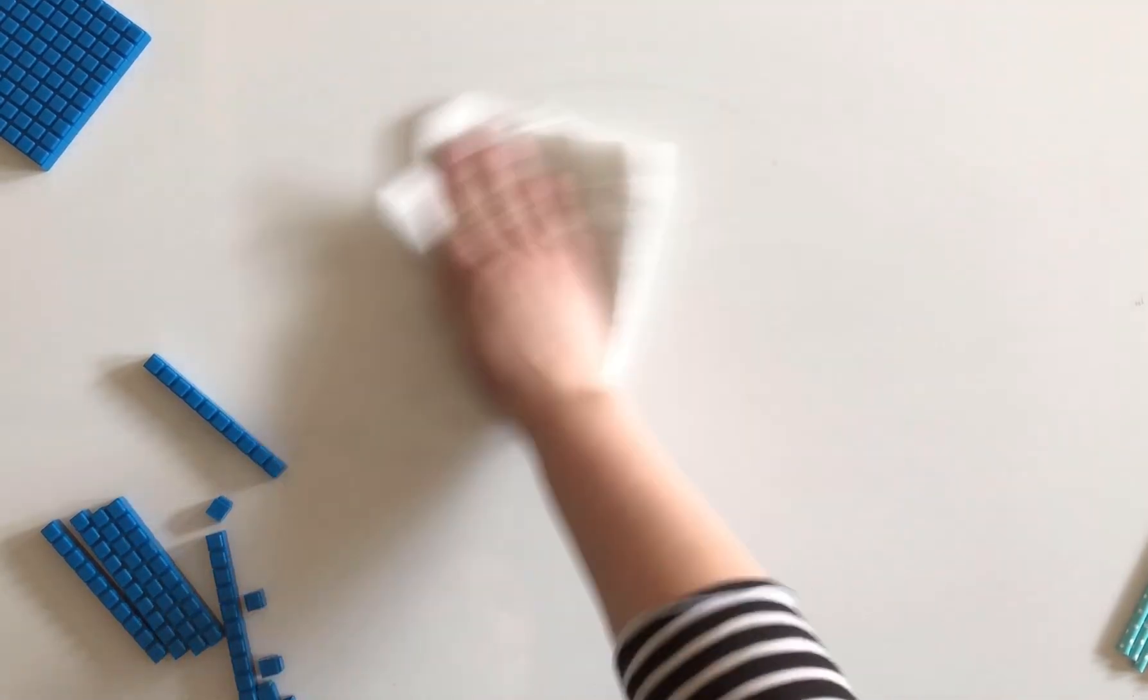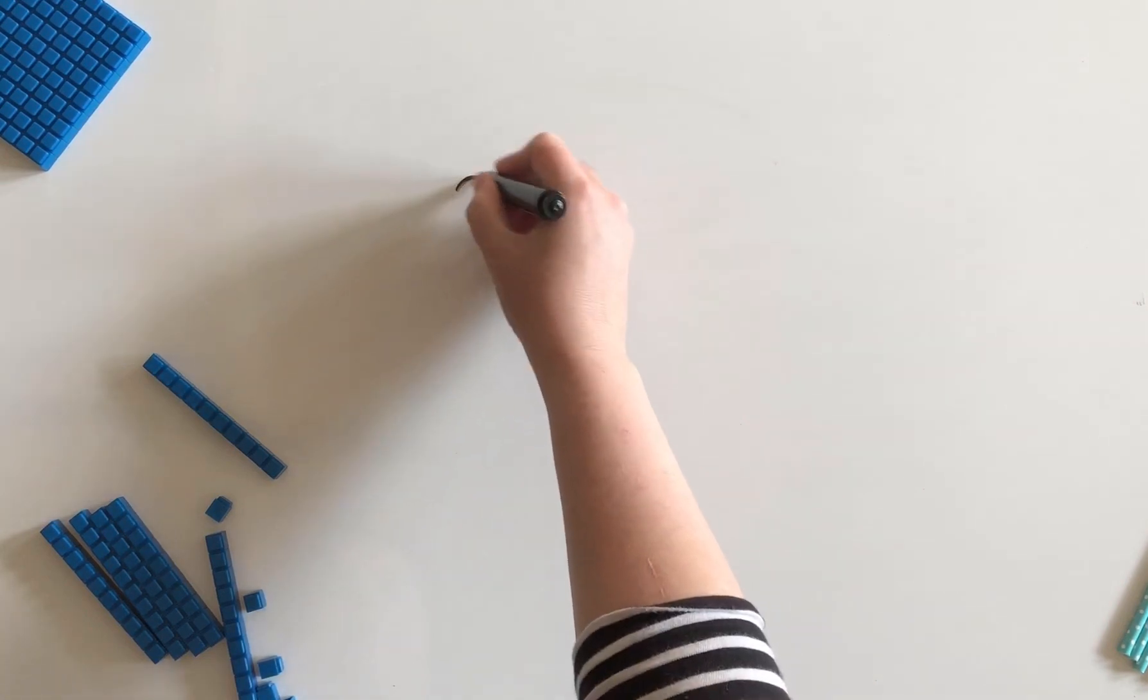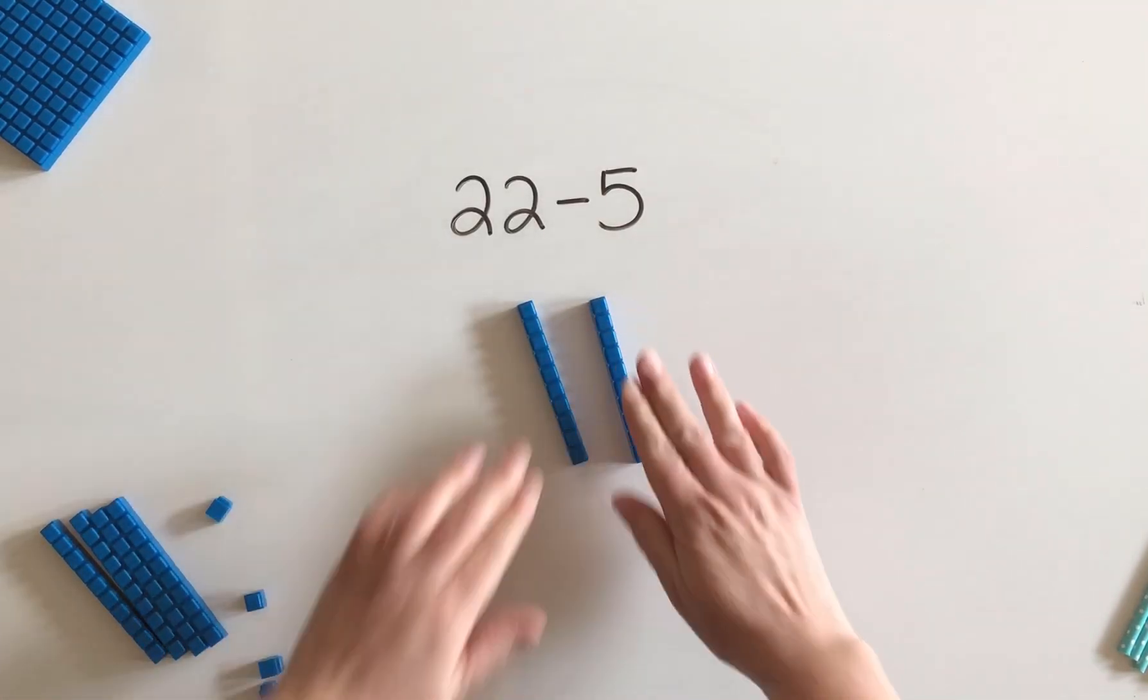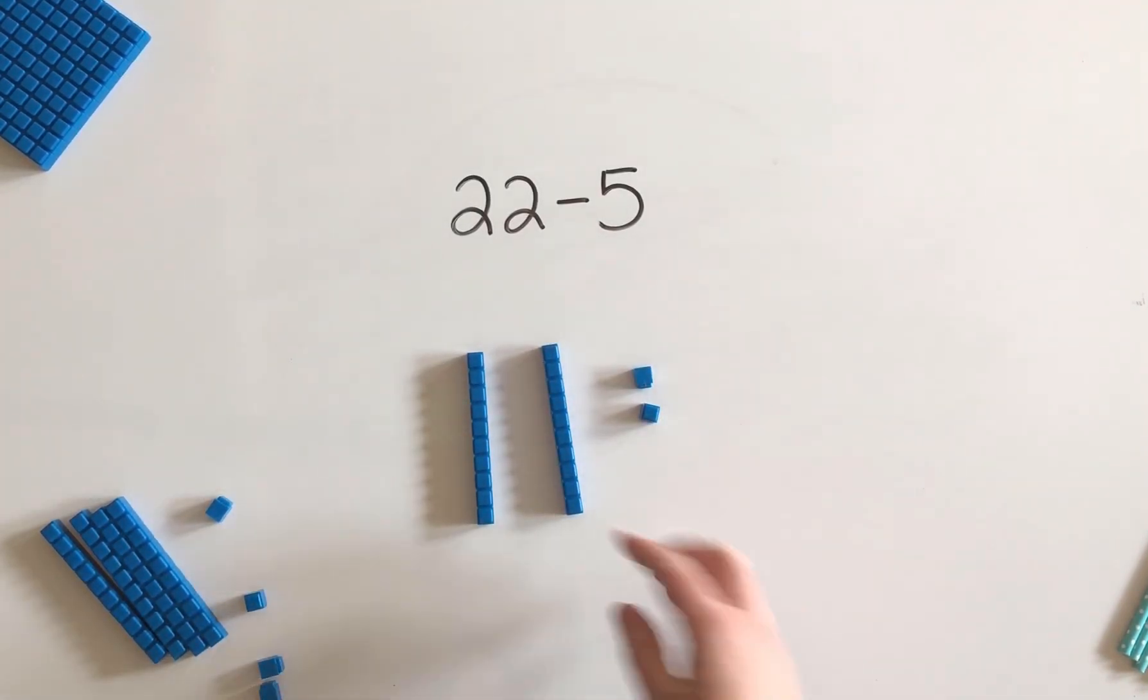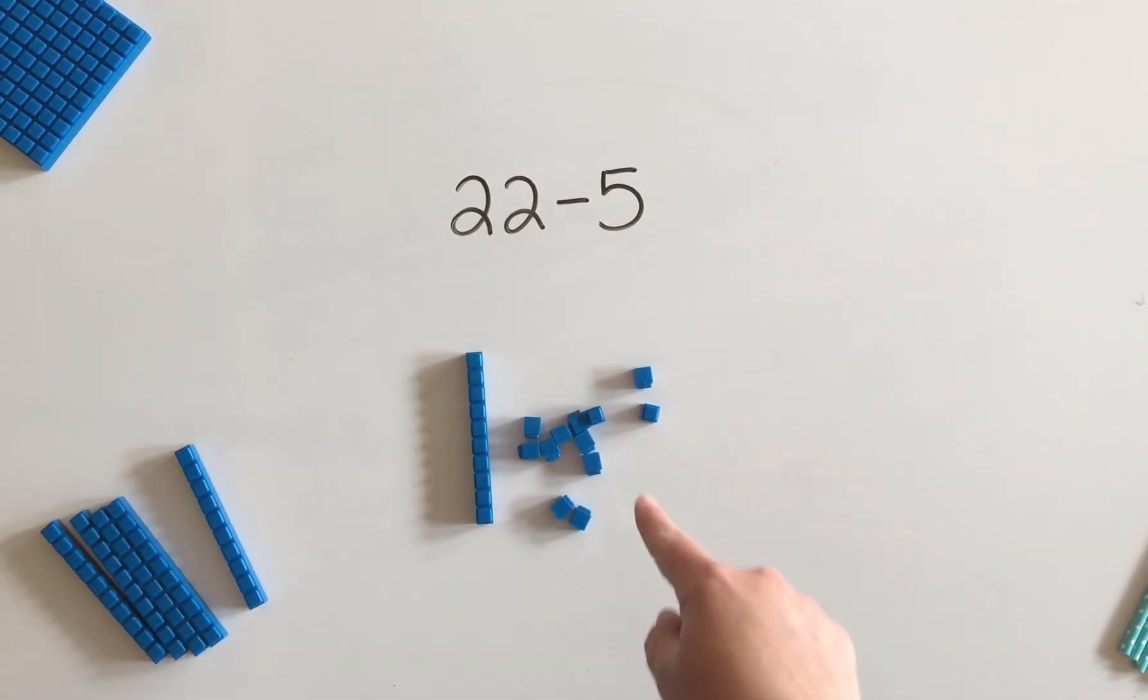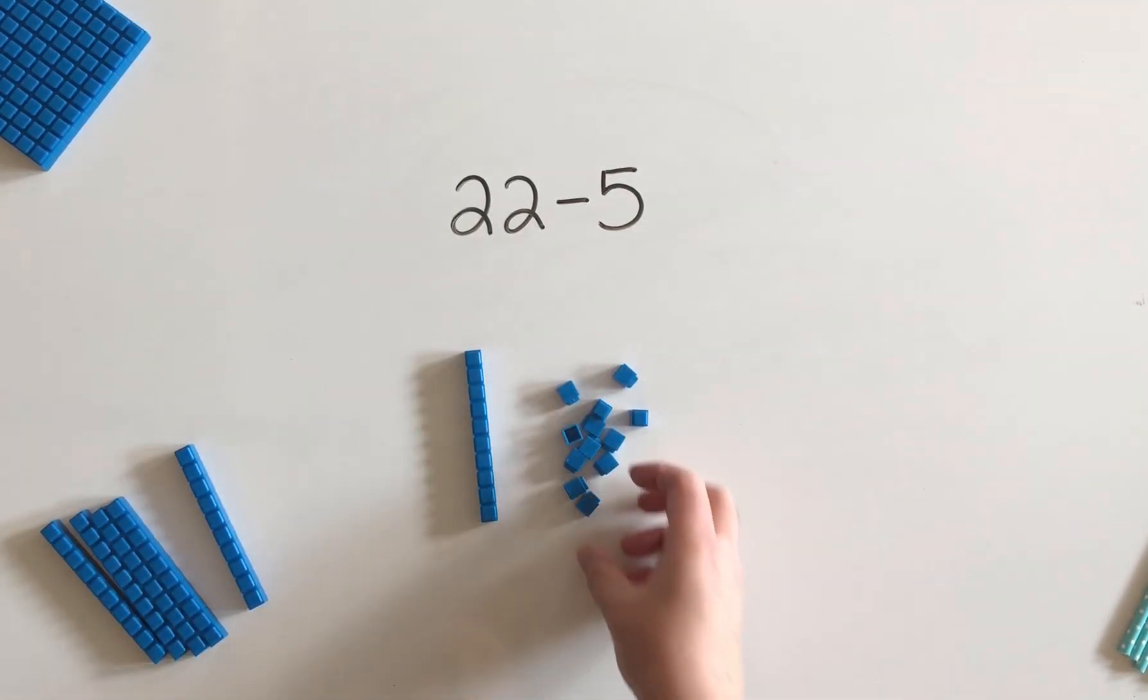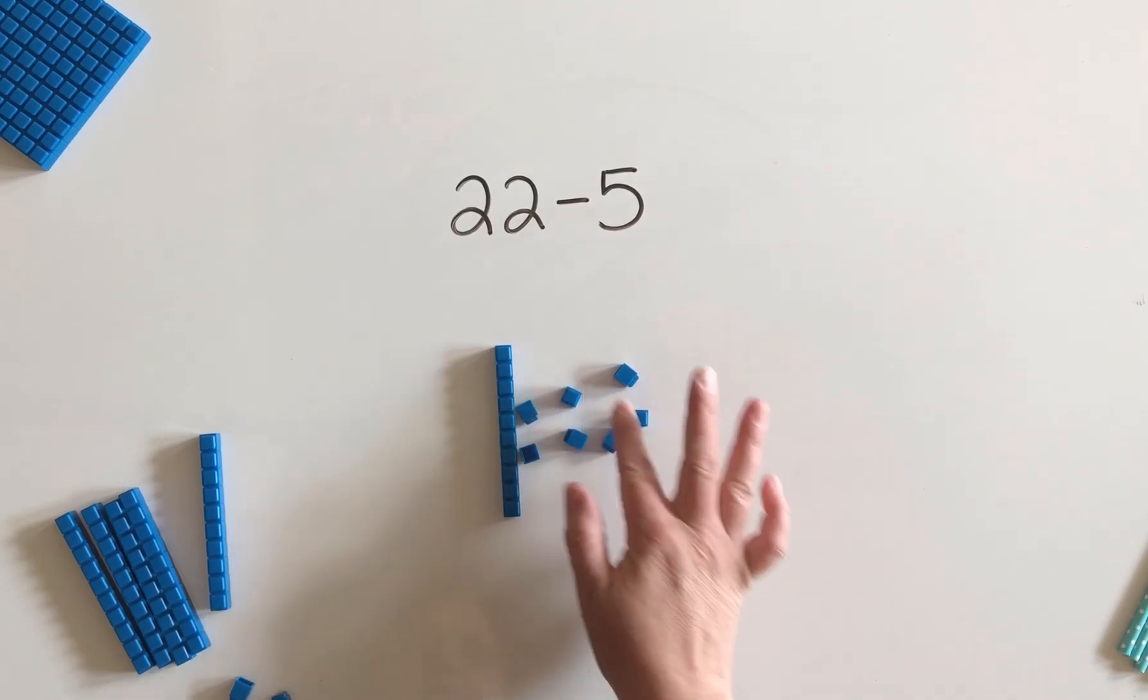Now what happens when we throw regrouping into the mix, which you might refer to as carrying? Suppose that we are going to do 22 subtract 5. So here we'll start with 22 like that. Now we want to subtract 5, but what happens here? We don't have 5 ones to take away, so we are going to have to trade in this 10 for 10 ones. So here I have my 10 ones, so I'll just make a trade. So we still have the same number, it's just broken up a little bit differently. Right now we have 1 ten and 12 ones, which still makes 22, and now we can take away 5, and we are left with 10, 11, 12, 13, 14, 15, 16, 17.